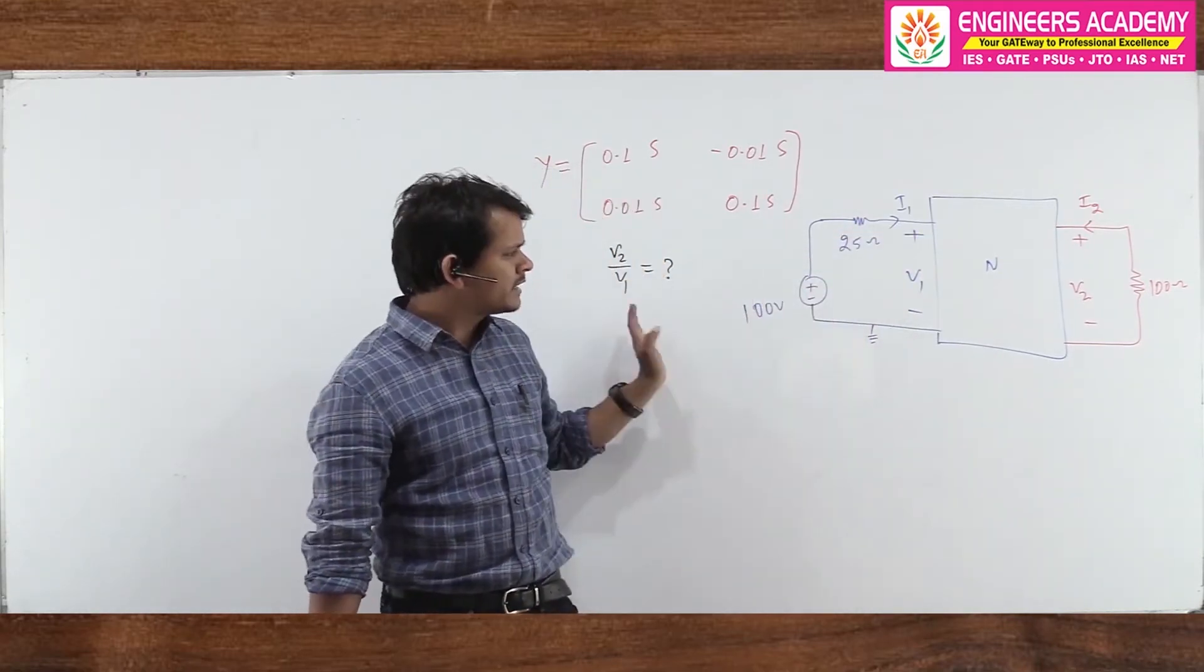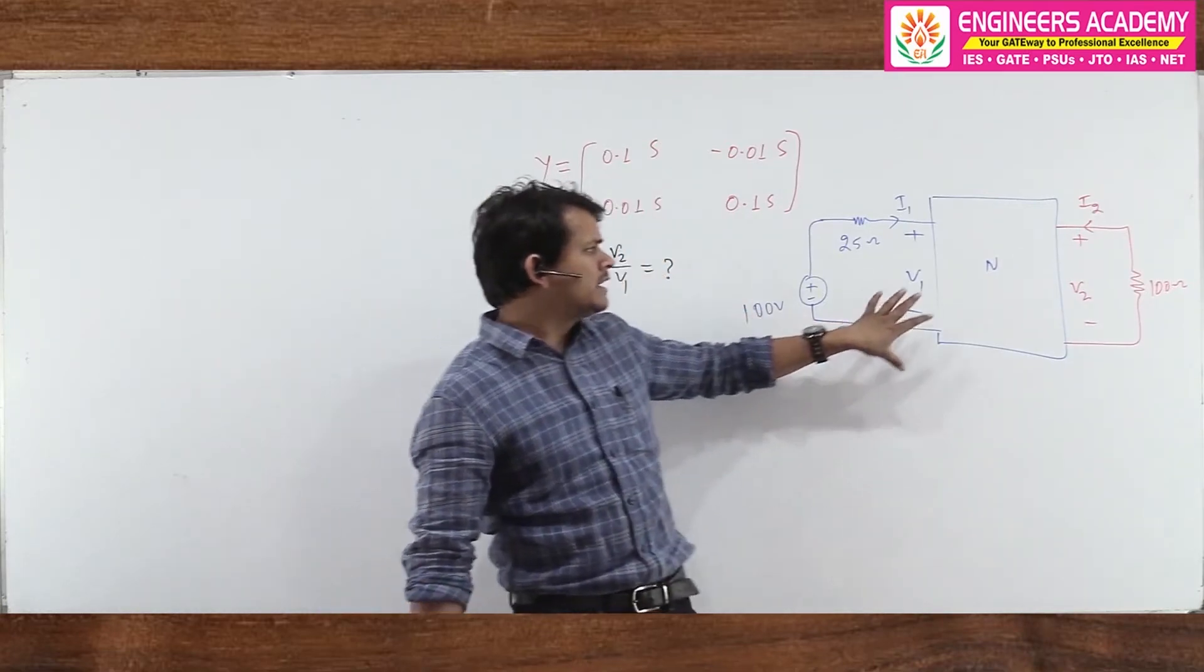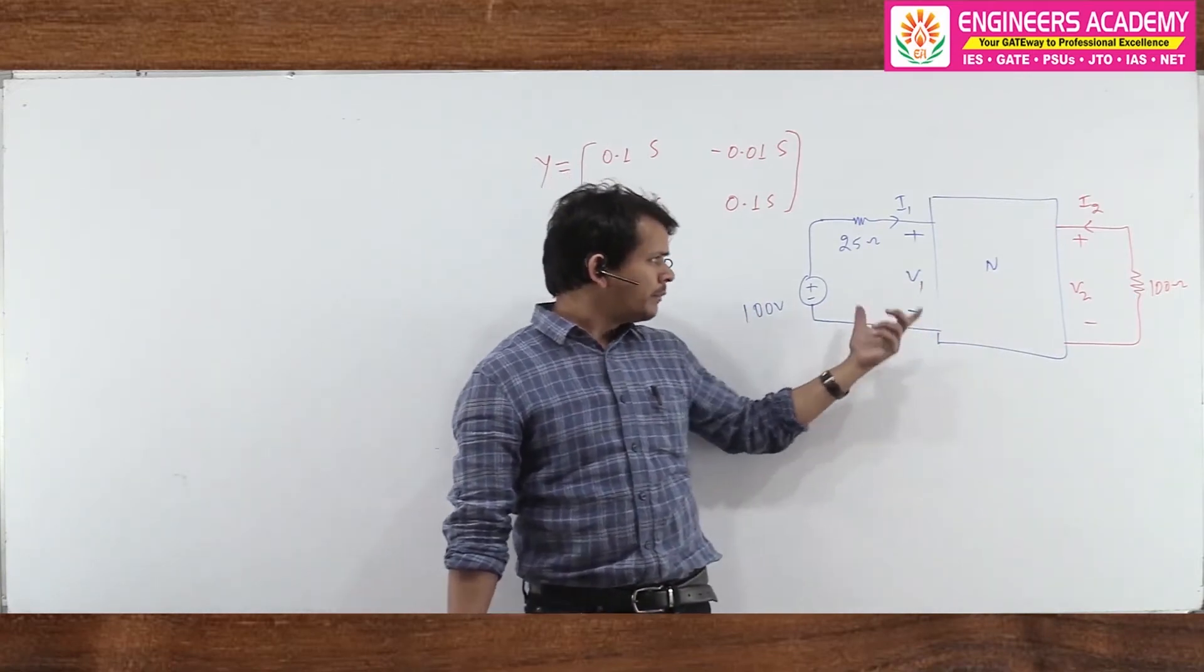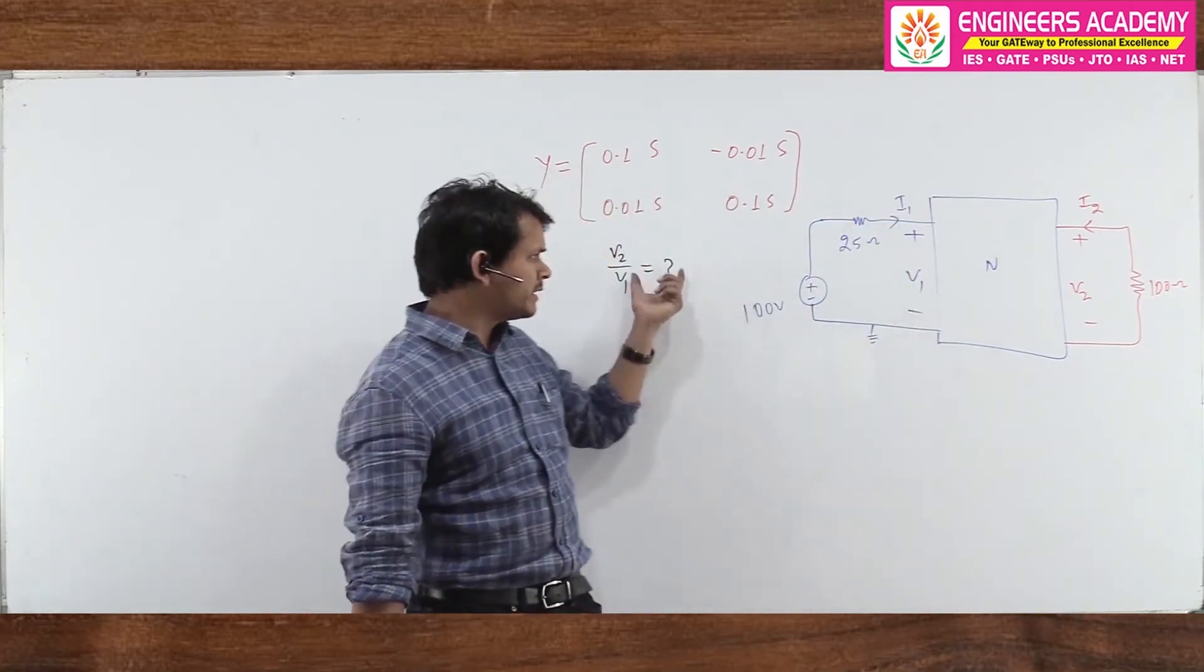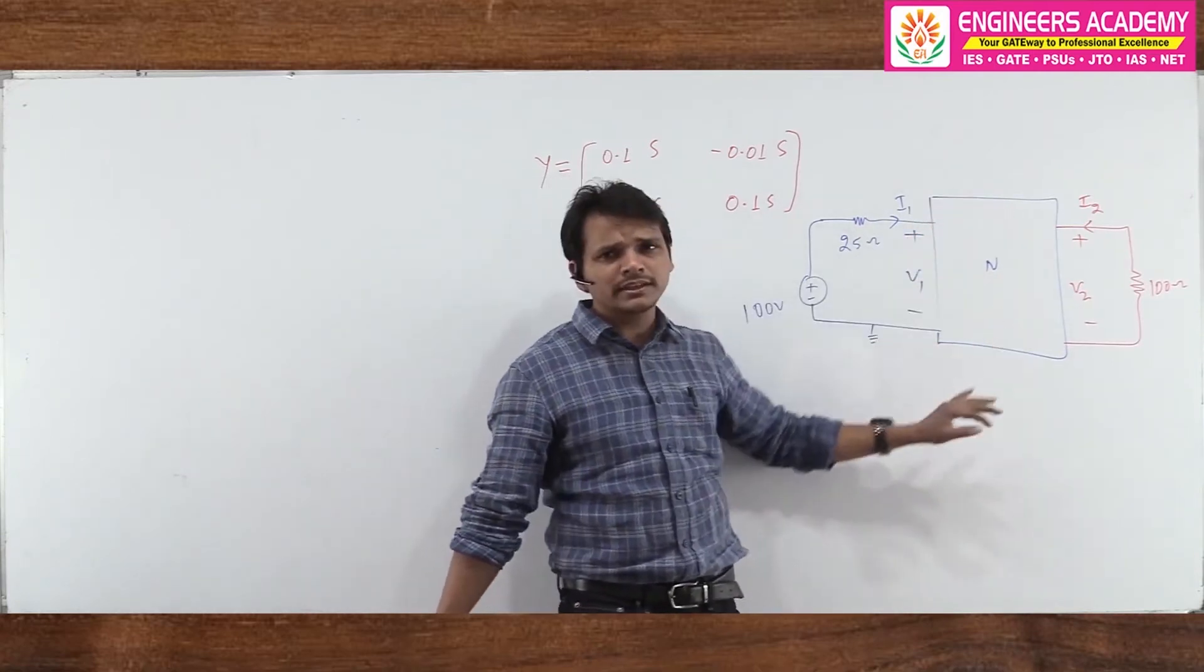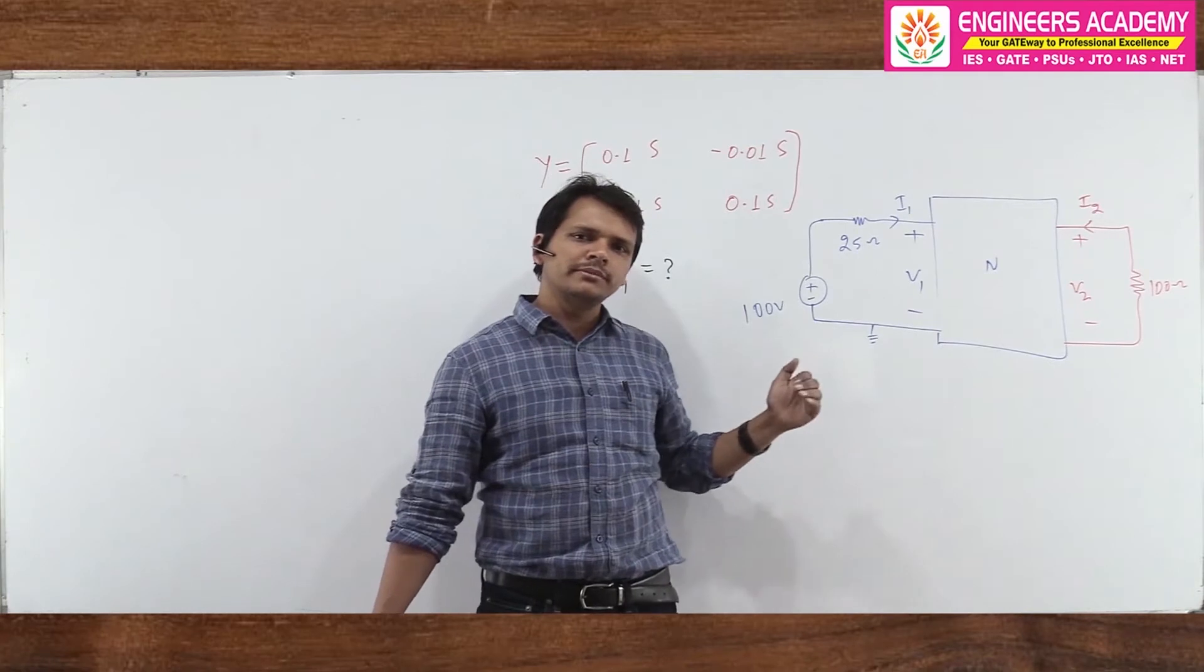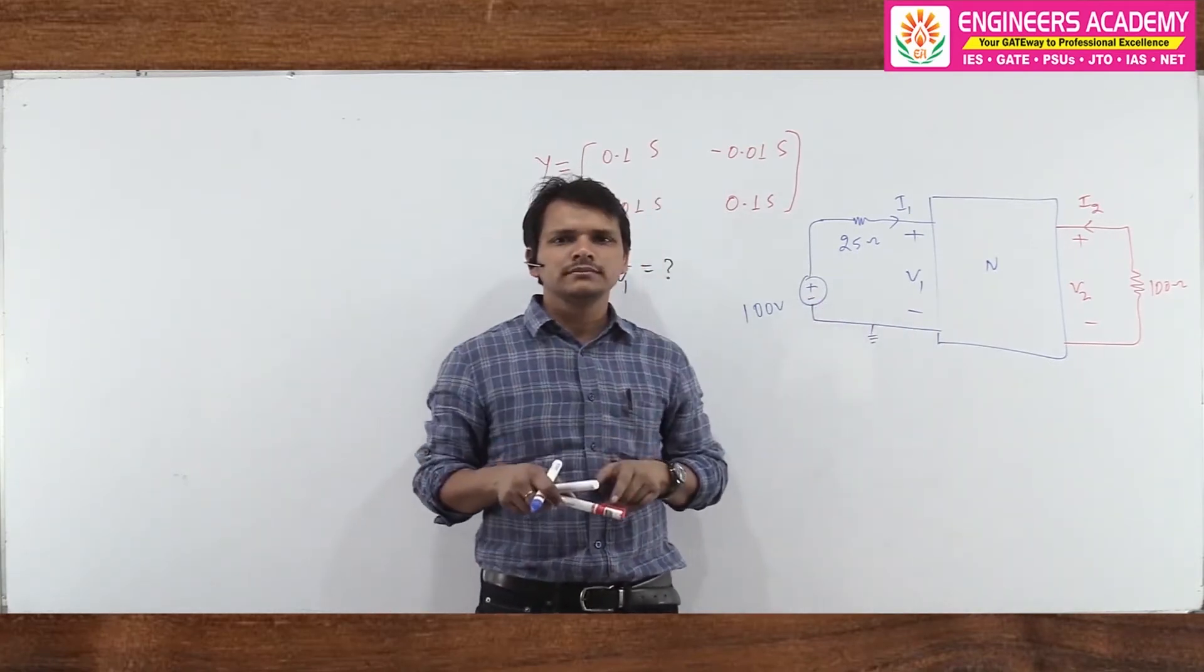The first method which is replacing with equivalent circuit is a very hectic way to calculate. The second method is I will relate it with equations and your answer will come. Now let's see how to do this. The method is such that it fits in this circuit. Whenever you are asked anything, whether it's RTH or VTH, always relate the given network with mathematical equations. Because even if you make an equivalent circuit, you have to write equations.